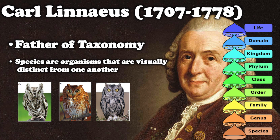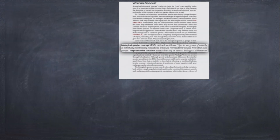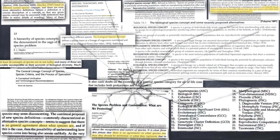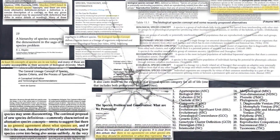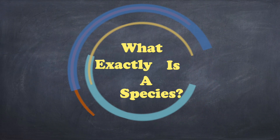Besides, that Linnaeus guy lived like 400 years ago. There has to be a more modern, accurate definition to tell us what a species is, so let's check the literature. Wait. Okay, so the literature must be broken, because there has to be a general consensus as to what a species is by now, right?